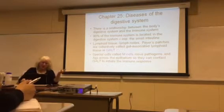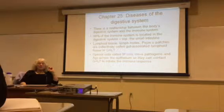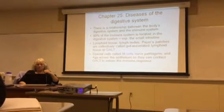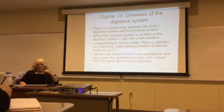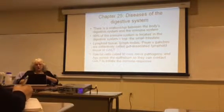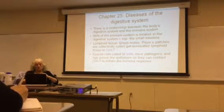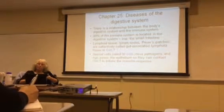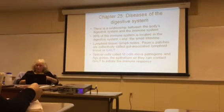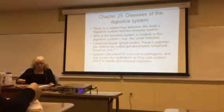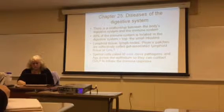There's a relationship between the body's digestive system and your immune system — 80% of the immune system is located in the digestive system, especially the small intestine. Lymphoid tissue, lymph nodes, and Peyer's patches are collectively known as gut-associated lymphoid tissue, or GALT. There are special cells called M cells that move pathogens or antigens across the epithelium so they come in contact with the immune tissues and create an immune response.